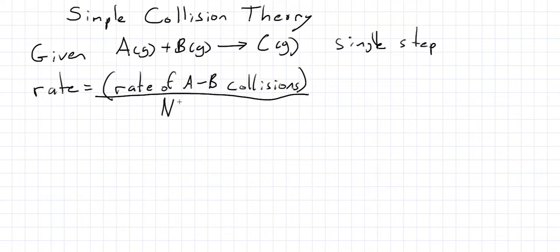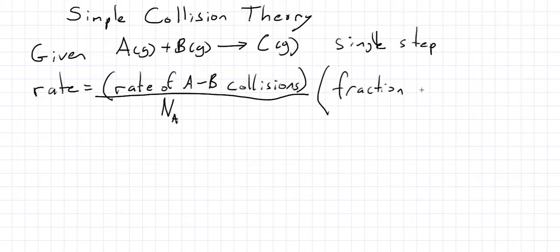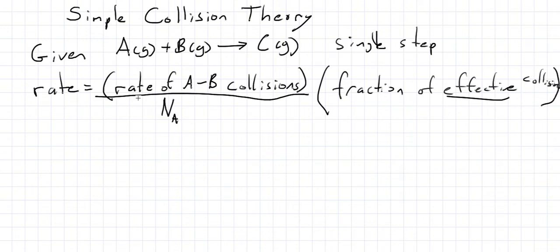We want to divide by Avogadro's number to give this the moles of collisions per second. That would not quite be enough because we know some collisions don't result in any reaction — the molecules can just barely tap each other, or they could be oriented incorrectly. So we also need the fraction of effective collisions. We can multiply that by the number of collisions per second, divide by moles, and we'll have moles of stuff reacting per second. This should give us an equation for rate.